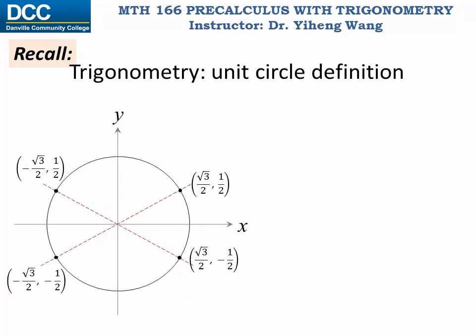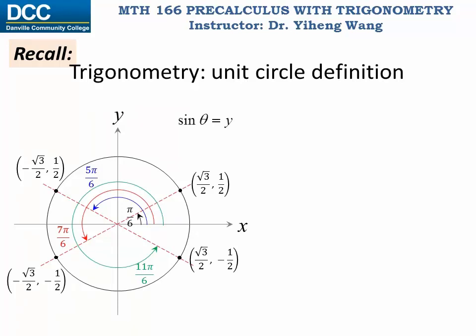Let's focus on these four points. We learned already that they can correspond to the angles π/6, 5π/6, 7π/6, and 11π/6. Based on the unit circle definition for trigonometry, we know that all the y-coordinates are the sine values of these angles, and all the x-coordinates are the cosine values of these angles.